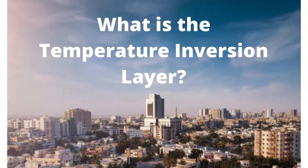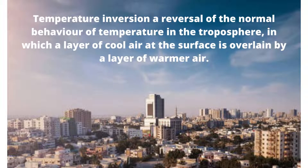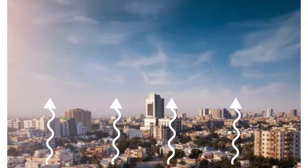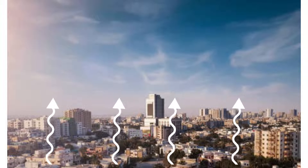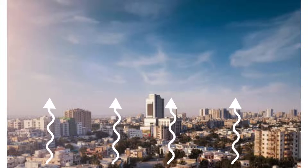In geography, you have often heard about the temperature inversion layer. For Pakistan, we know that it is responsible for the lack of convection rainfall towards the south of the country. So what is the temperature inversion layer, and how does it prevent convectional rainfall from taking place? Let's make it a little simple.